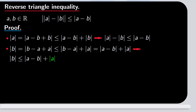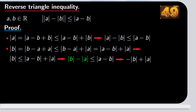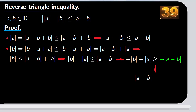Moving the absolute value of a to the other side by subtracting, we obtain that the absolute value of b minus the absolute value of a is less than or equal to the absolute value of a minus b. Multiplying this inequality by minus one, we change the signs and get minus the absolute value of b plus the absolute value of a, which is greater than or equal to minus the absolute value of a minus b. Rewriting this, we have minus the absolute value of a minus b is less than or equal to the absolute value of a minus the absolute value of b.